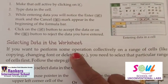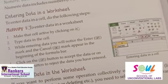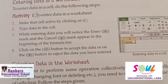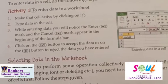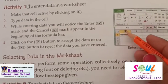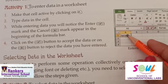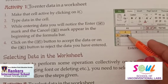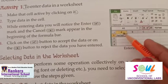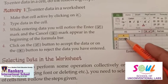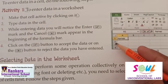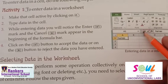Entering data in a worksheet — how do we enter data in a cell? Follow these steps: first, make the cell active by clicking on it. Then type the data in the cell. While entering the data, you can notice the green check mark (Enter) button and the red cross (Cancel) button.